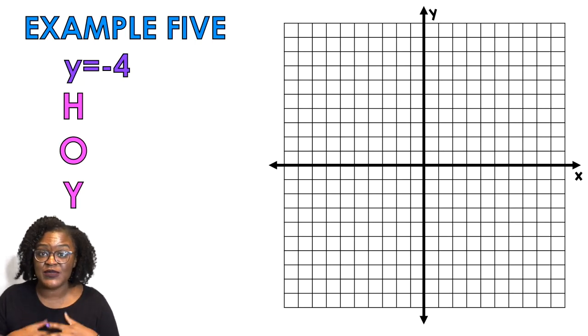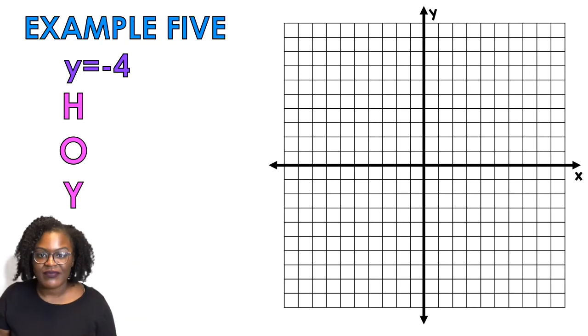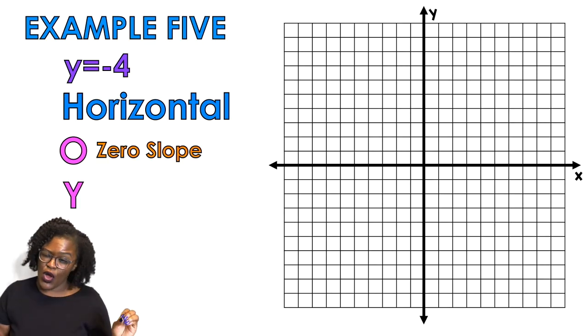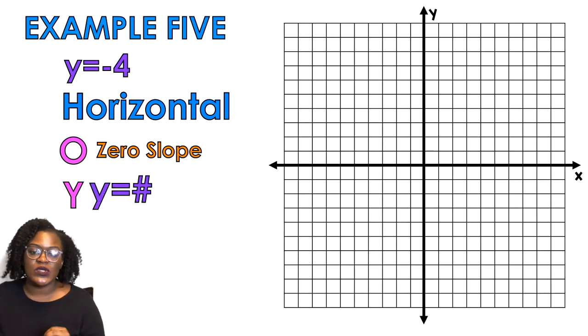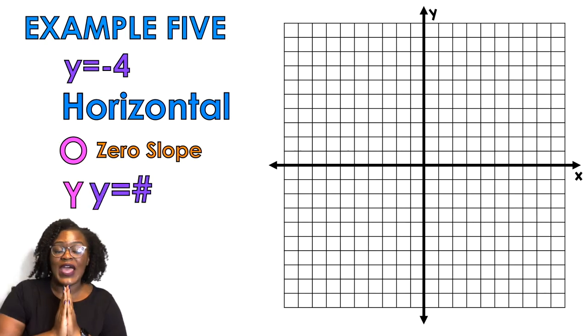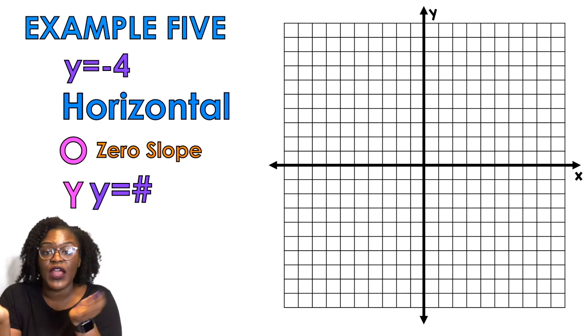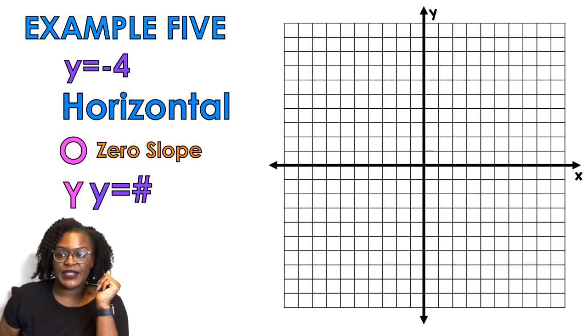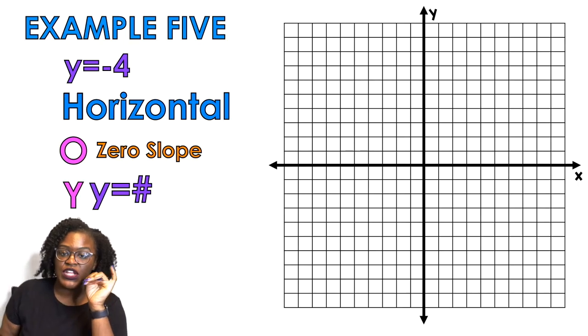My algebra one teacher taught me this when I was in algebra one way back when. She taught me that HOI stands for H is horizontal, O is zero because that's what it has, it has a zero slope, and y equals a number. So y equals a number is what the equation looks like. y = -4, y equals a number. Anytime I see that it should trigger something in my brain that says this is a horizontal line. So all I have to do is I'm gonna go find negative four on the y-axis.